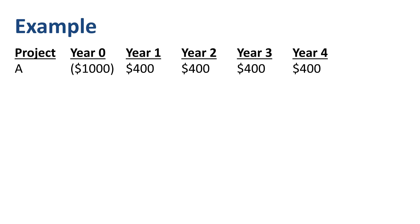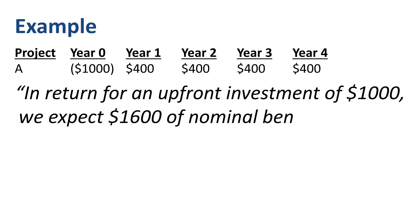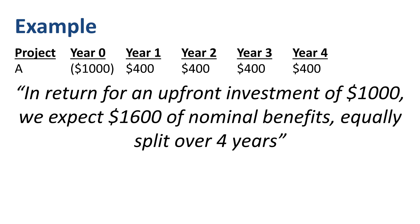Let's work through an example to illustrate those three steps. In the case of Project A, this is the expected cash flow profile. In return for an upfront investment of $1,000, we expect $1,600 of nominal benefits, equally split over four years. This is before we apply the time value of money.